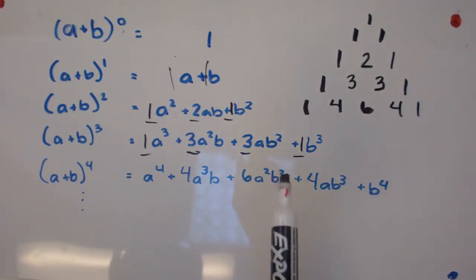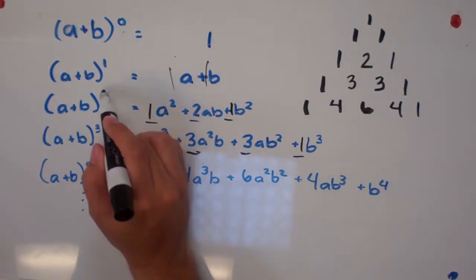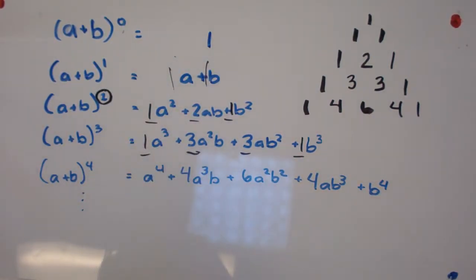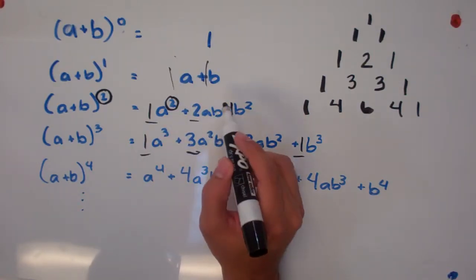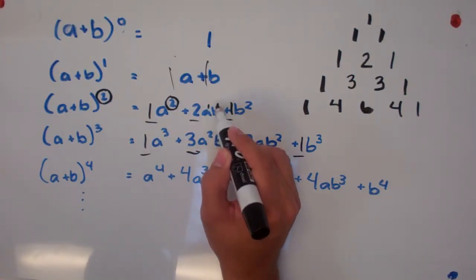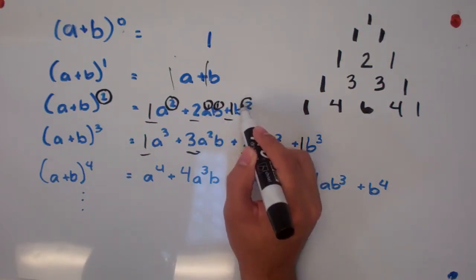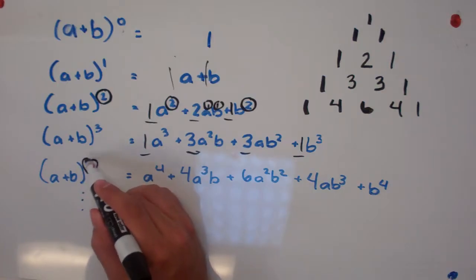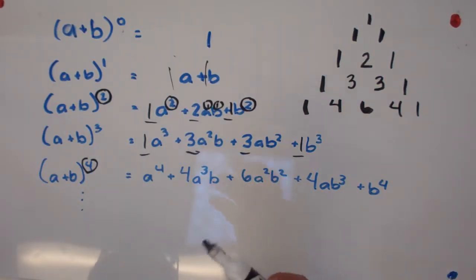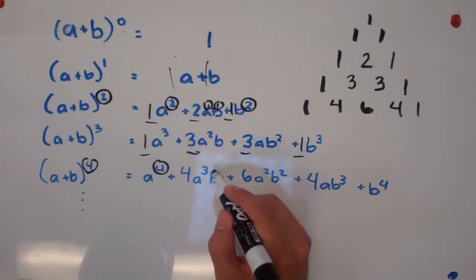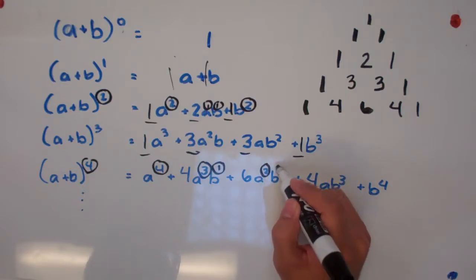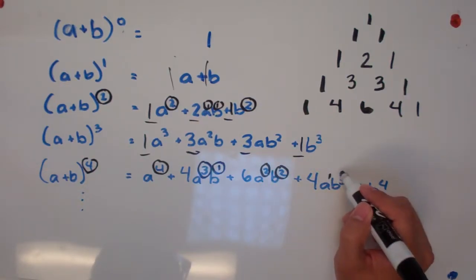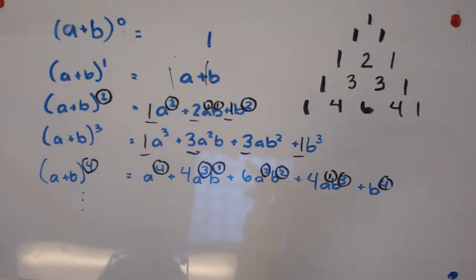The things we should notice: first, the coefficients are from Pascal's Triangle. Another thing is the sum of the exponents — over here the overall exponent is two, and if you look at every term, the sum of the exponents is also two. For the second term, both a and b are to the first power, so the sum is still two. Skipping ahead to the fourth power, every single term should have exponents summing to four: four and zero, three and one, two and two, one and three, zero and four. That's another pattern.